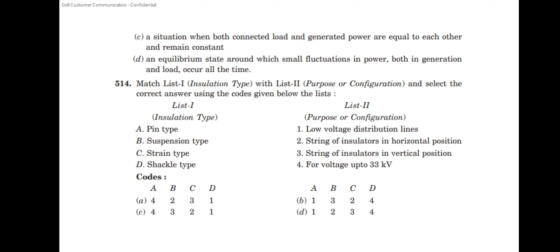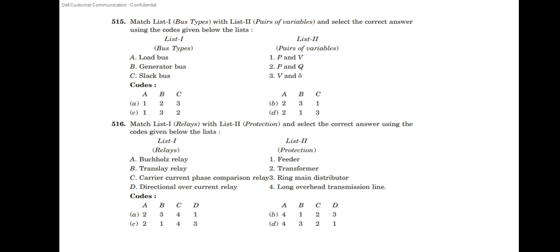Pin type is for voltage up to 33 kV. Suspension type uses a string of insulators in vertical position. Strain type uses a string of insulators in horizontal position. Shackle type is for low voltage distribution lines — the answer is option C. For the bus type pair of variables: load bus uses P and Q; generator bus uses P and V; slack bus uses V and delta — the answer is option D. For protection: busbar uses busbar relay, transformer uses Buchholz relay, feeder uses carrier current phase comparison, long overhead transmission line uses directional overcurrent relay, and ring main distributor — the answer is option C.